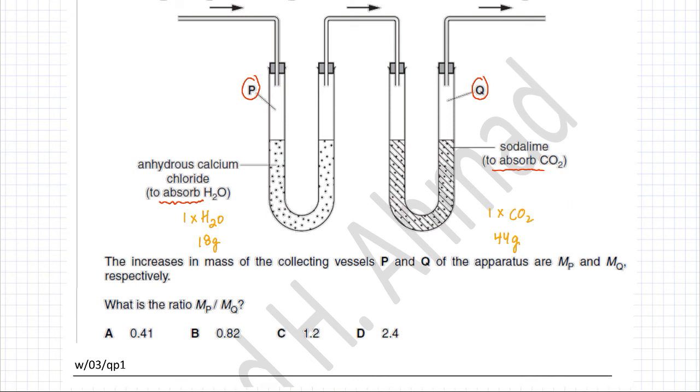We've figured out MP, this is going to be the increase in mass of P, and we figured out MQ, this would be the increase in mass of container Q. We need to find the ratio MP divided by MQ which is going to be 18 divided by 44. I'm going to use my calculator now, so 18 divided by 44 equals 0.41 approximately. So option A is going to be the correct option.